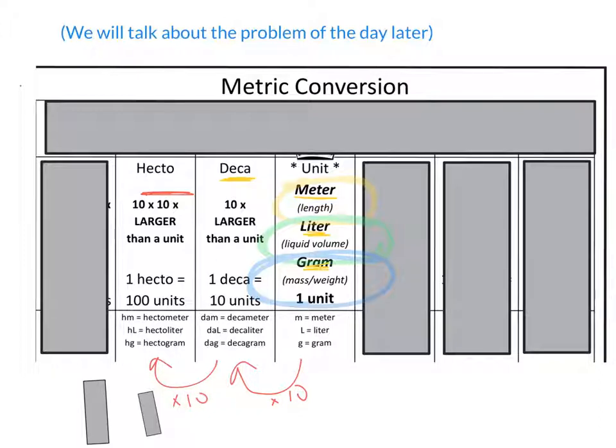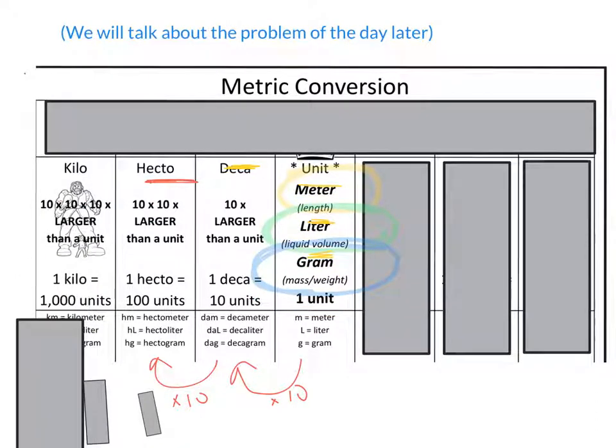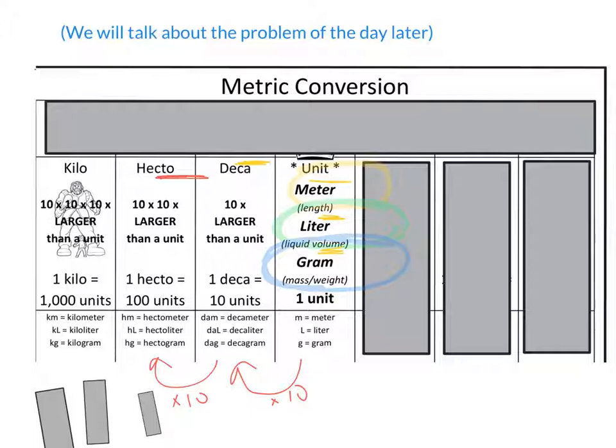If something is 10 times bigger than a hectometer, we also have a different prefix for it. We call it a kilometer or kiloliter or kilogram. Does that word sound familiar? So if a kilo is 10 times bigger than a hecto, which is 10 times bigger than a deca, how many times bigger is a kiloliter compared to a regular liter? 1,000. Because it got 10 times 10 times 10 times bigger, so it's 1,000 times bigger. Go ahead and fill in your chart.